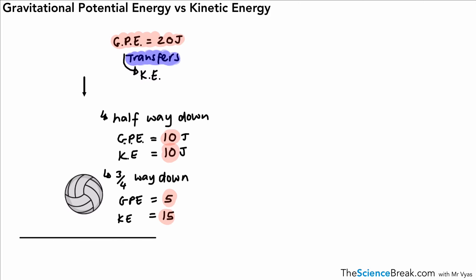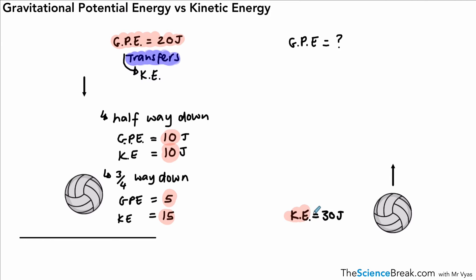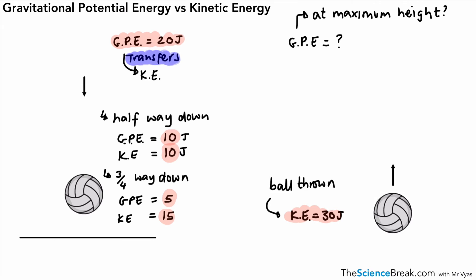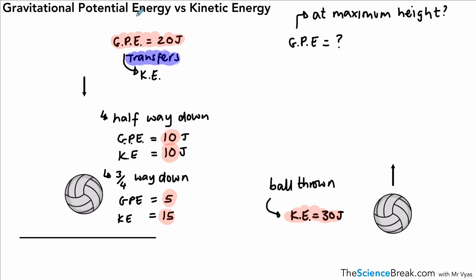Now imagine a ball thrown vertically upwards with a kinetic energy of 30 joules. As it rises, that kinetic energy is transferred to gravitational potential energy. If all of that energy is transferred, the gravitational potential energy at the maximum height reached will be 30 joules. Again, we are assuming there are no other energy transfers.